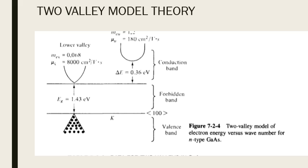Why does the Gunn diode only exhibit a negative resistance region and behave as an oscillator? The answer lies in its construction. It belongs to the category of 3-5 periodic table compounds like gallium arsenide, indium phosphide, and cadmium telluride. Only these alloy compounds can exhibit Gunn diode characteristics, meaning they can exhibit a negative resistance region.